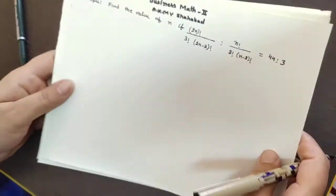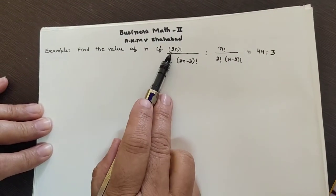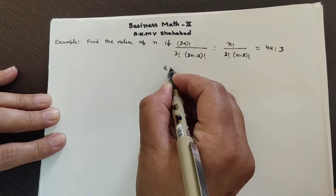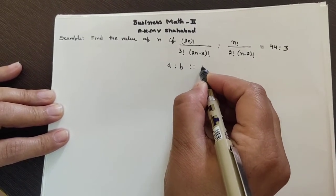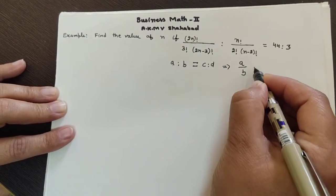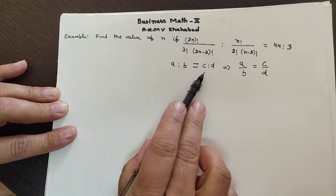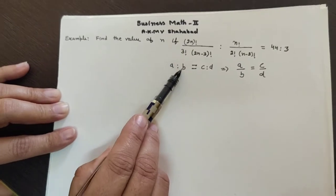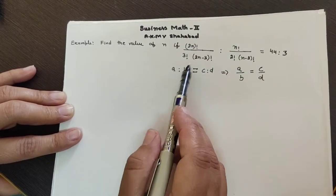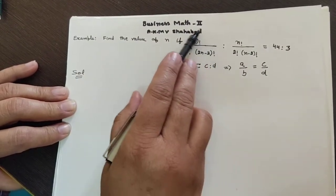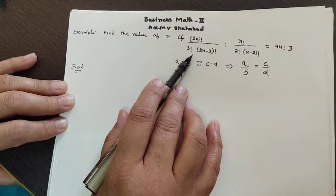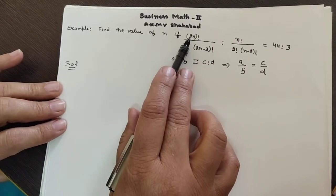One more question: find the value of n if (2n)! : (n! · n!) = 44 : 3 over some ratio. As studied in previous classes, a ratio b : c ratio d with an equality sign means a/b = c/d. Comparing: a = (2n)!, b = the denominator factorial, c and d follow similarly.